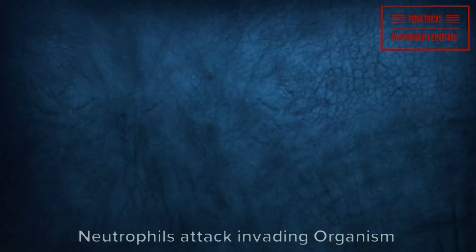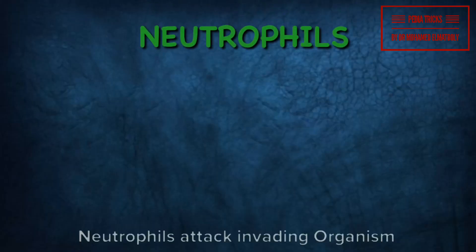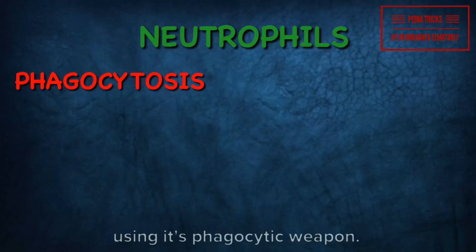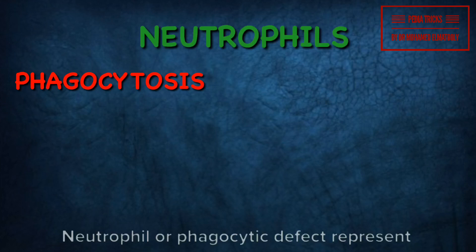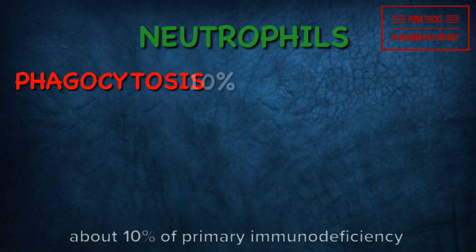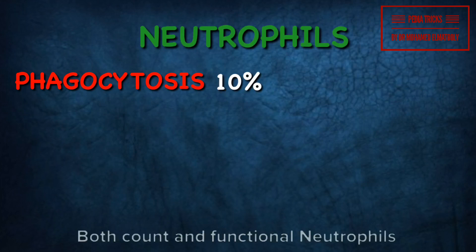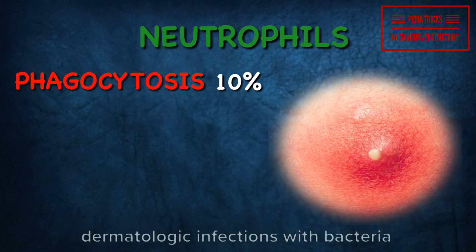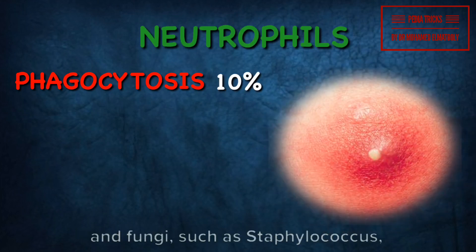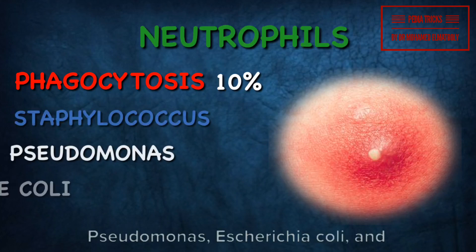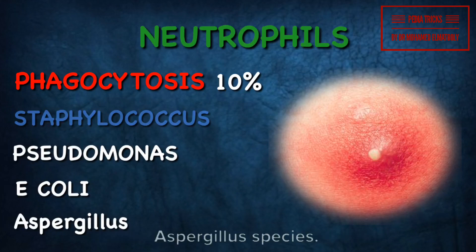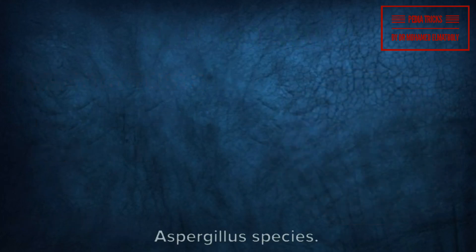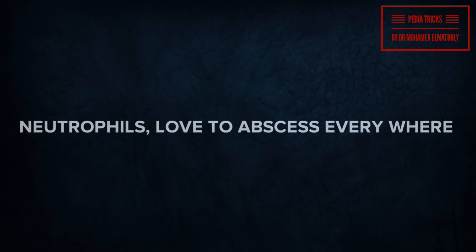Neutrophils attack invading organisms using their phagocytic weapon. Neutrophil or phagocytic defect represents about 10% of primary immunodeficiency diseases. Both count and functional neutrophil defects are characterized by recurrent dermatologic infections with bacteria and fungi, such as Staphylococcus, Pseudomonas, Escherichia coli, and Aspergillus species. Neutrophils love to abscess everywhere.